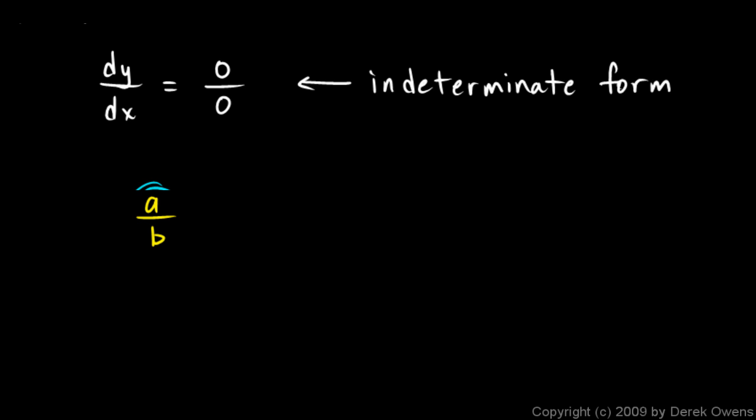Well, it turns out if a and b here are both infinitely small quantities, sometimes it ends up being zero, sometimes it ends up being infinity, and sometimes it ends up being some finite value. And we just can't determine it just from this information. It's an indeterminate form.